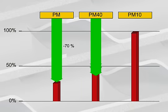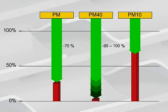Filtration reaches even up to 100% for particle masses under 40 nanometers. The much discussed PM10 particulate matter emission is around zero for vehicles equipped with a PM-CAT.